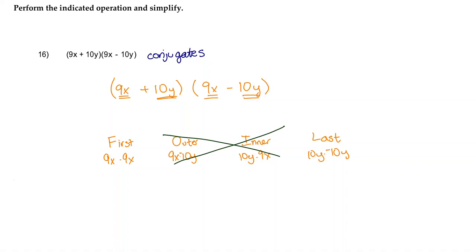Let's just prove that theory. So 9x times negative 10y is negative 90xy. 10y times 9x is 90xy. Negative 90xy plus 90xy is 0. And that's the shortcut. That's why these will always cancel out.